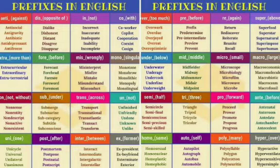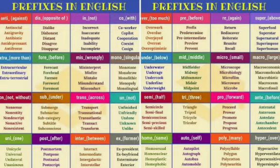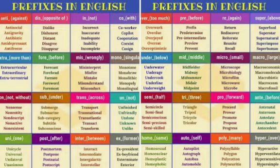Let us look at some of the suffixes used to form adjectives. The suffixes like '-able', '-ant', '-atory', '-ed', '-ible', '-ic', and '-ance' are placed after verbs to form adjectives.